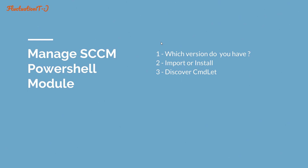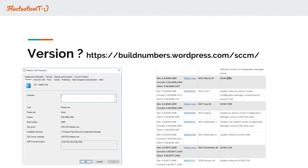The first way to connect is to go directly on the server, the second one is to do it remotely, or install the cmdlet module. You must ask yourself some questions: which version do you have, do you want to import it or install it, and how to discover all the cmdlets? First, you must be aware about the version you have.